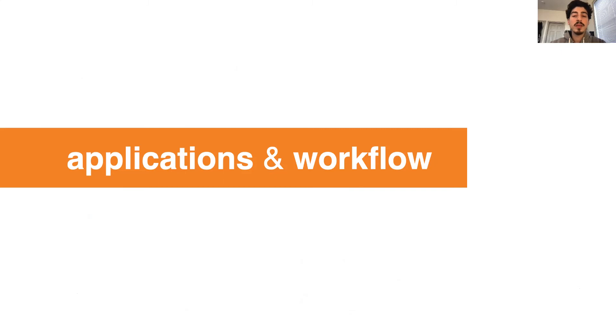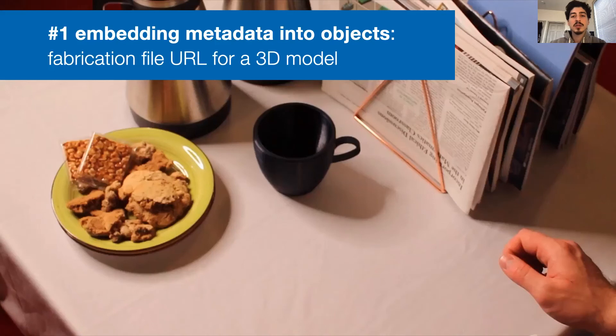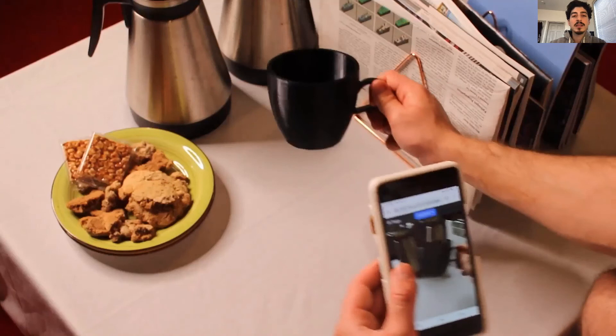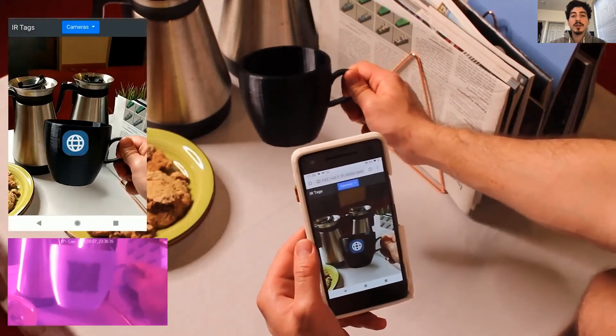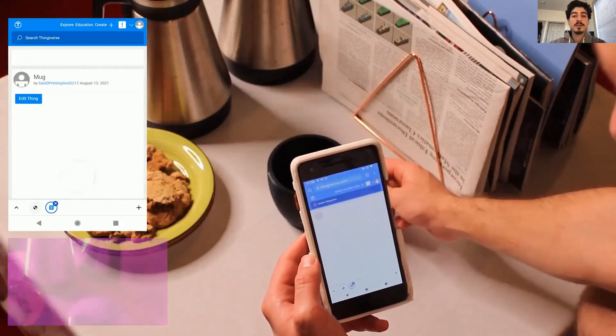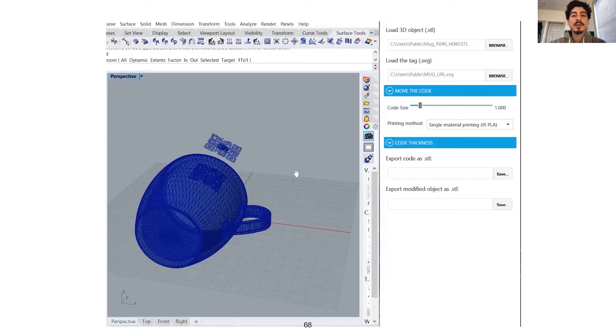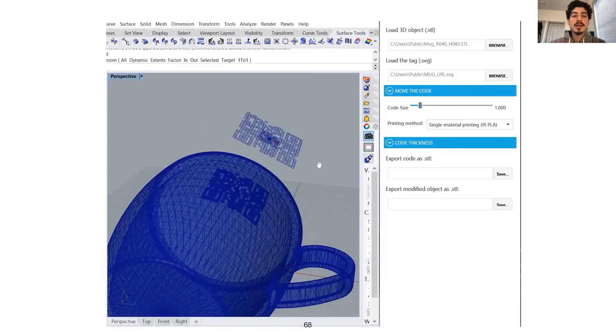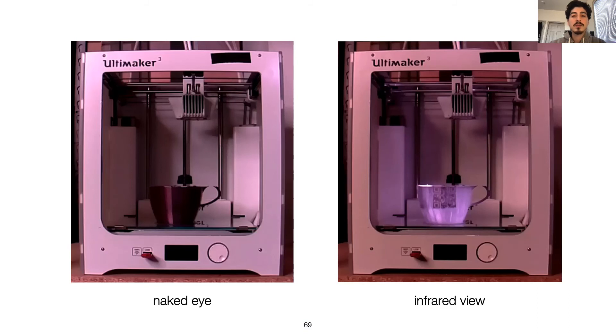So now that we know how our method works, let's talk about its applications and workflow. Infrared tags can be used to embed data about the object into the object itself. In this example, we have embedded the mug's fabrication link. If the user likes to look up an object, they can take a picture of it to download its 3D model and print a copy for themselves. To embed this URL into the object, makers can simply use our UI. Next, one can directly 3D print the modified model. Here, you see the print halfway through. On the left, the naked eye view, and on the right, the IR view, which reveals the QR code.